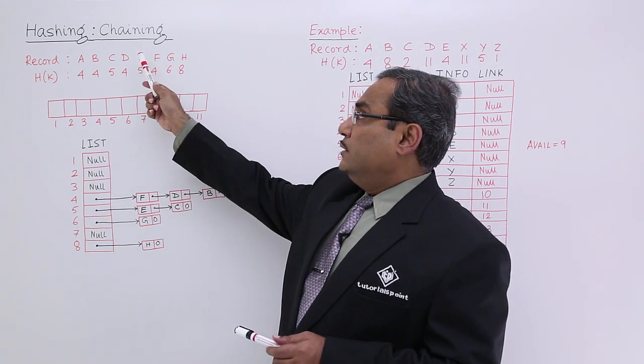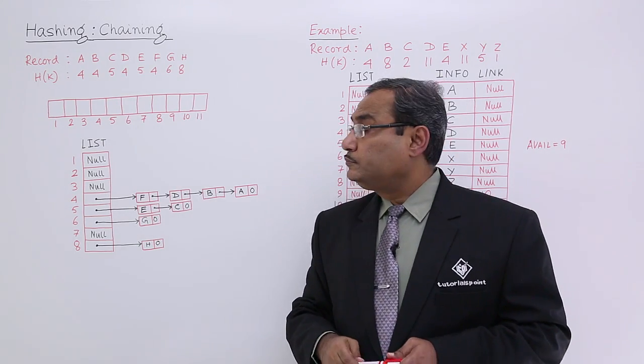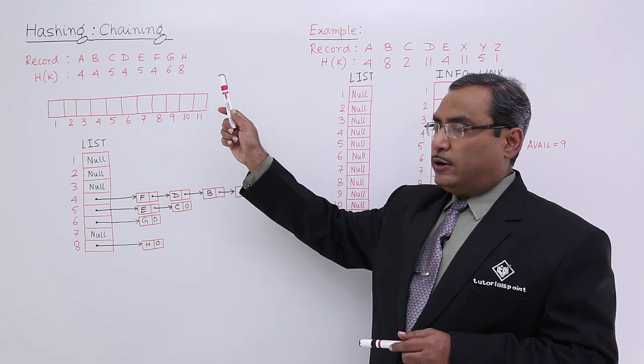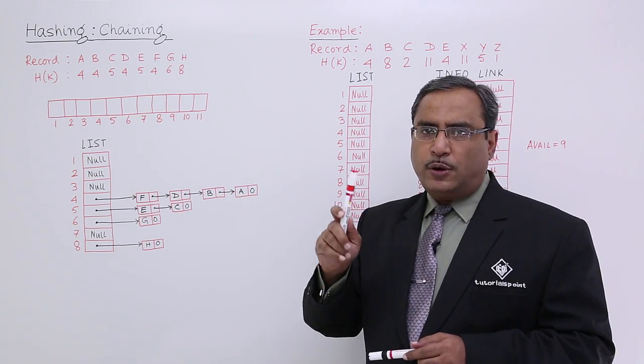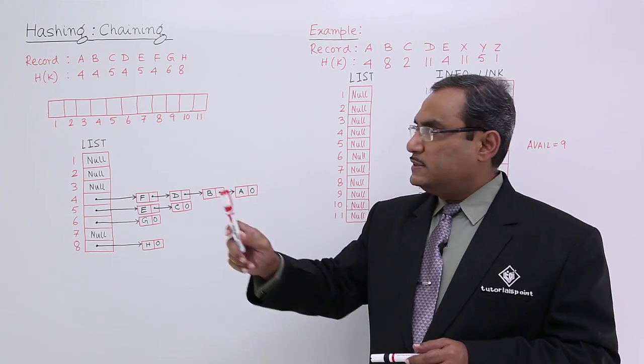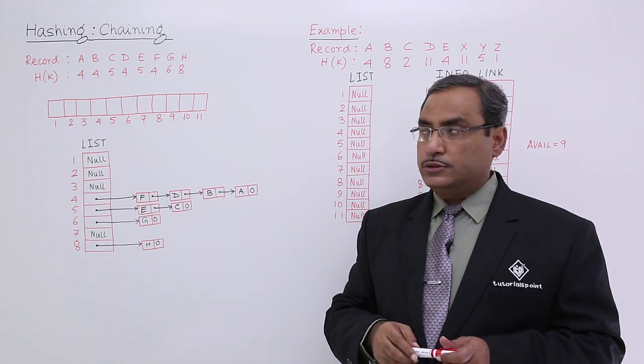Let us consider this example. We are having 8 records ranging from A to H, and the respective H of K, that is the hash addresses, have been listed for all the 8 records.